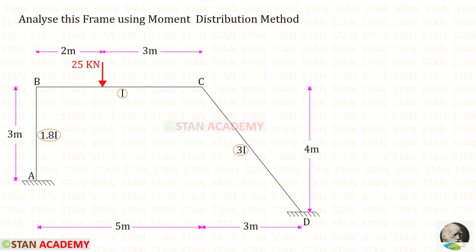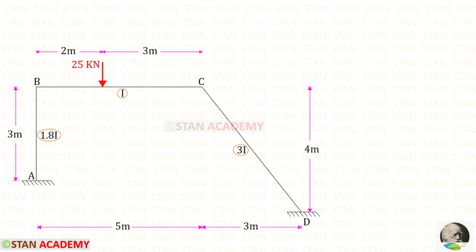Hello everyone. Today, we are going to analyze this frame using the moment distribution method. In this frame, there is a vertical member AB, a horizontal member BC, and an inclined member CD.